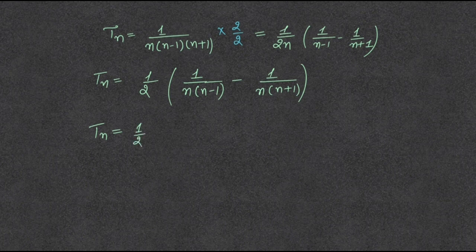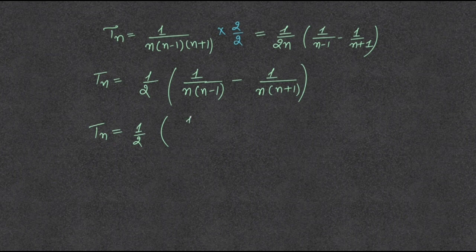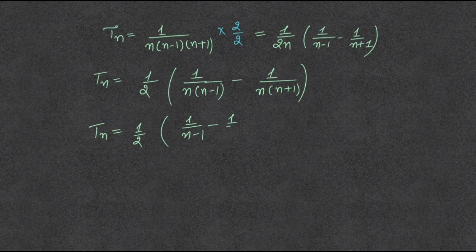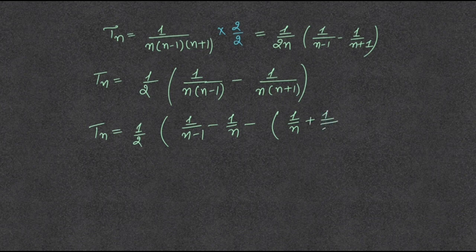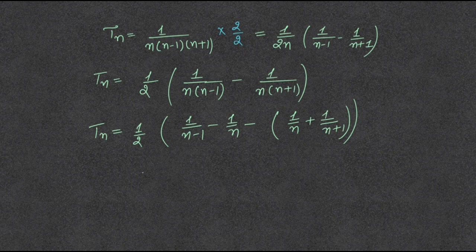The difference between the factors is again 1, so rewriting: 1 upon n minus 1 minus 1 upon n minus 1 upon n plus 1 upon n plus 1.